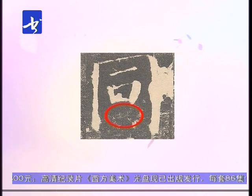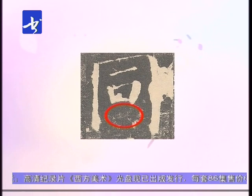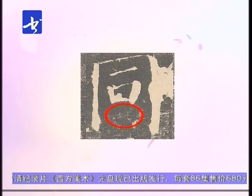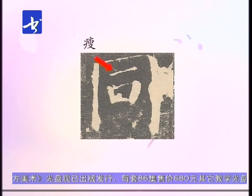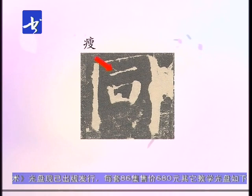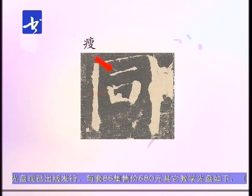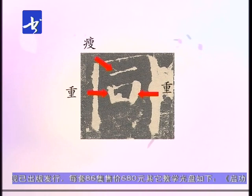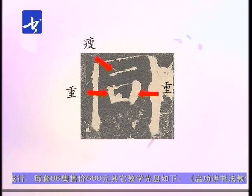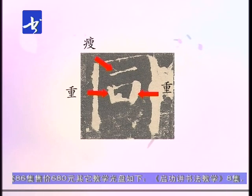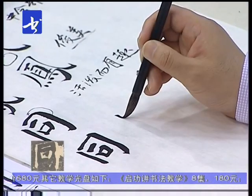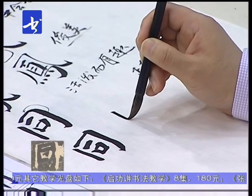他在处理时把里边的空白留得相对大一些，这样里边就显得活脱一些。他把短横写得瘦，口字的左侧跟右侧写得重一些，这样就起到了变化的作用。